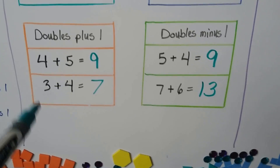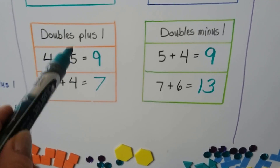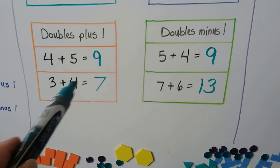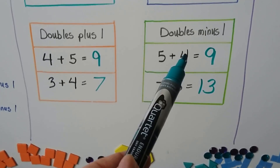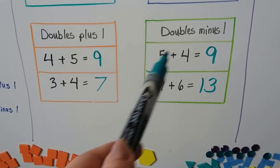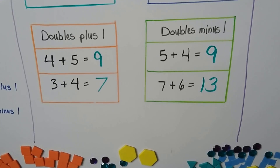You know it's doubles plus one when the second addend is one bigger than the first addend. You know it's doubles minus one when the second addend is one less than the first addend.